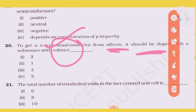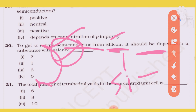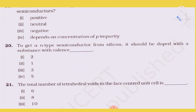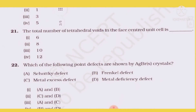To get n-type semiconductor from silicon, it should be doped with a substance having more valence electrons — an electron-rich impurity. The extra electron creates the charge carrier in n-type semiconductor.